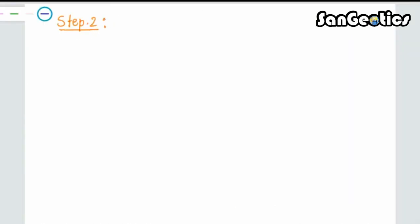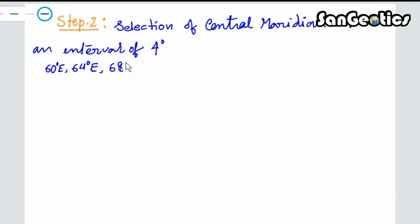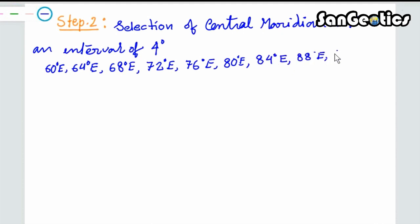Step 2: Calculation of central meridians at an interval of 4 degrees: 60°E, 64°E, 68°E, 72°E, 80°E, 84°E, 88°E, 92°E, 96°E, and 100°E.